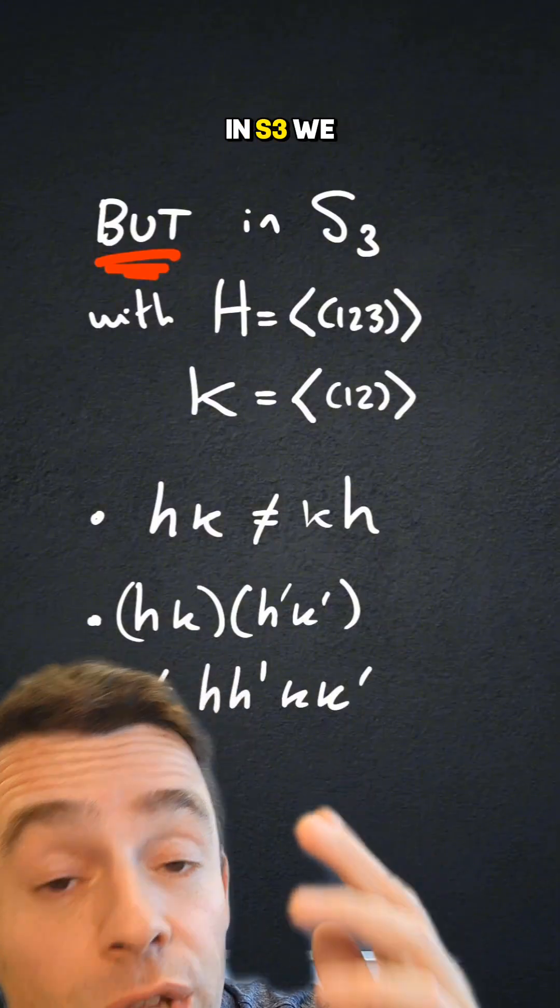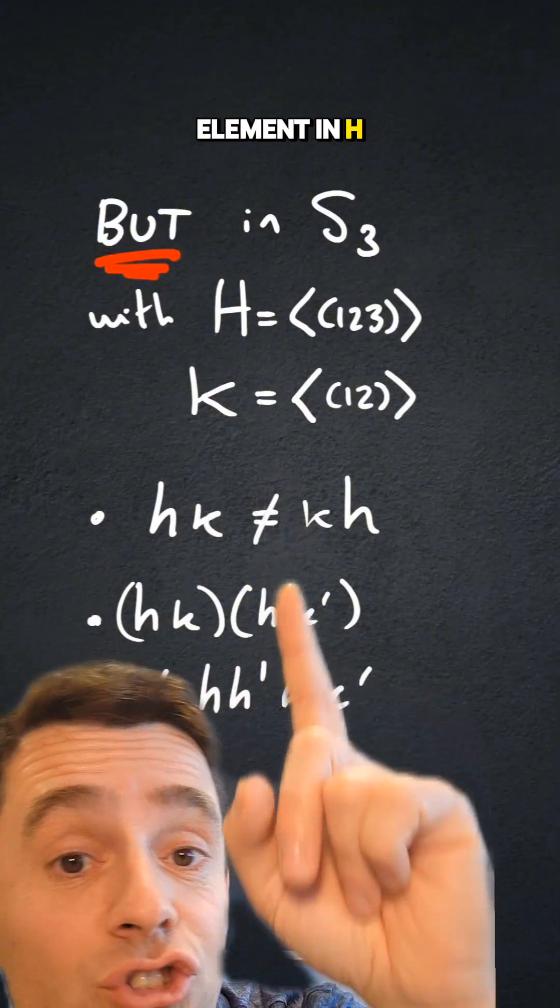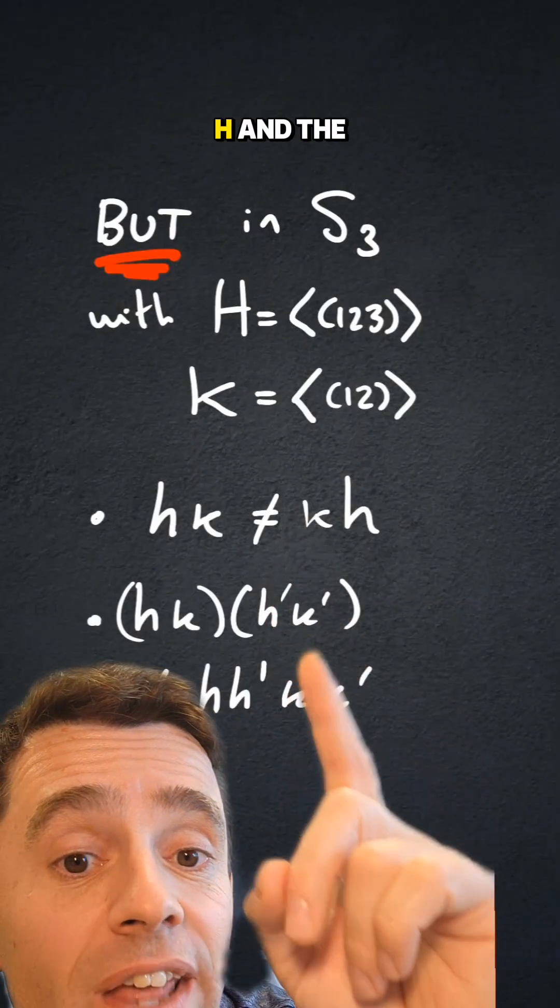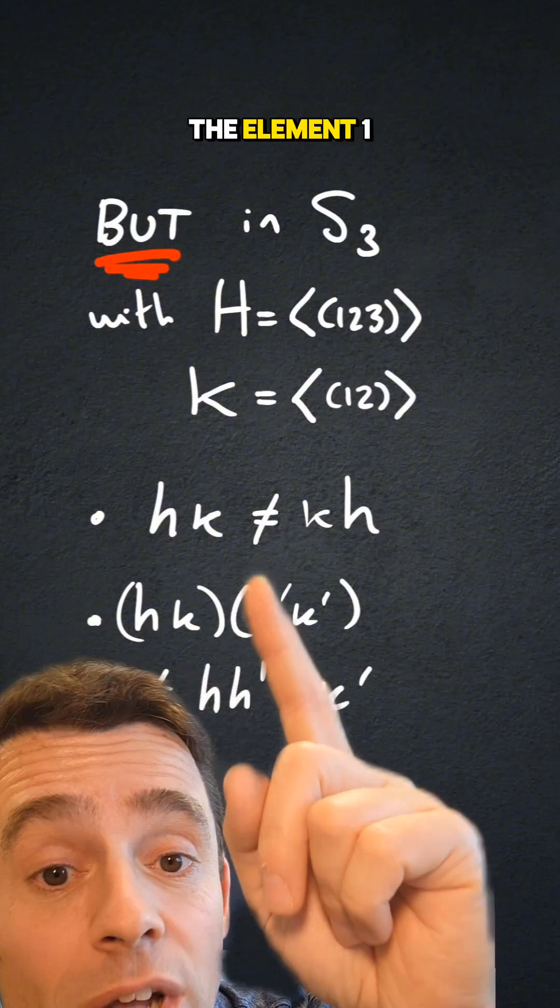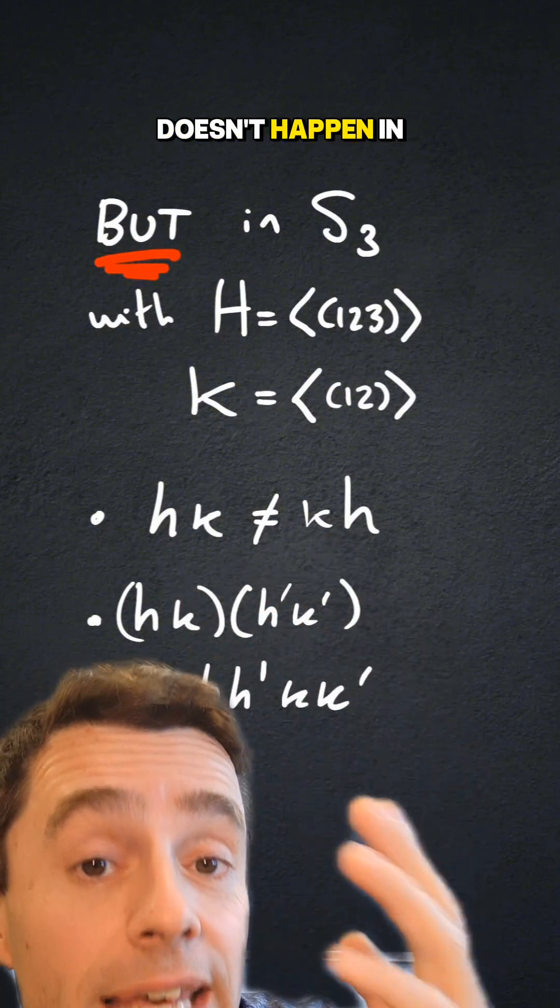So you see, in s3, we do have that every element of s3 can be written as an element in h times an element in k. However, the elements in h and the elements in k do not commute like they do in a direct product. The element one, two, three, and the element one, two do not commute, so that doesn't happen in general.